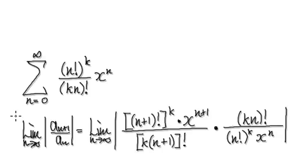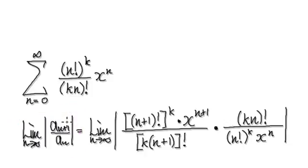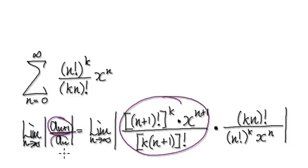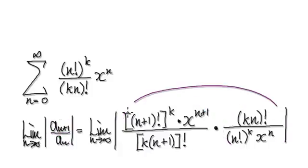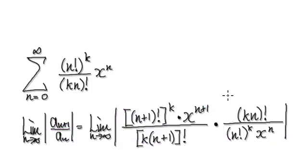To do this, we're going to use a ratio test. When it comes to the ratio test, we always need to compute this value here. We always need to get a_{n+1} — this is your a_{n+1} — divided by a_n. Dividing by a_n is the same as multiplying by the reciprocal of a_n, which would be this. So now it's just a matter of tidying this whole thing up.